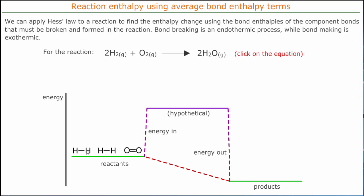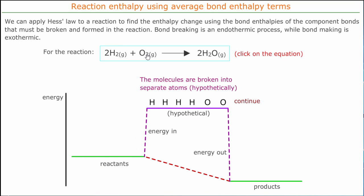You need to put energy in to break the window. So in order to break the two hydrogen molecules, we must break one bond in each hydrogen molecule. The oxygen requires breaking a double bond between the two oxygen atoms. The hypothetical situation is that we go to individual atoms — the molecules are broken down into separate atoms — and to do so we have to break these bonds.